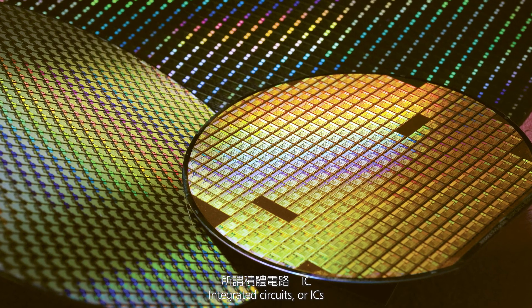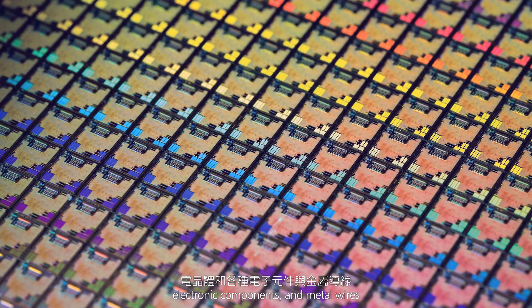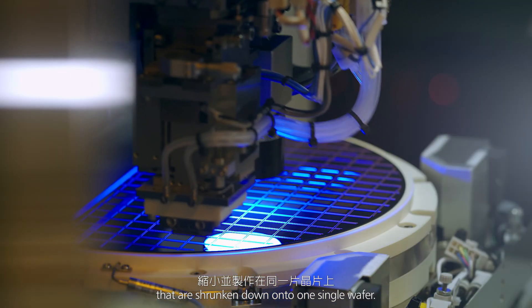Integrated circuits, or ICs, consist of millions or hundreds of millions of transistors, electronic components, and metal wires that are shrunken down onto one single wafer.